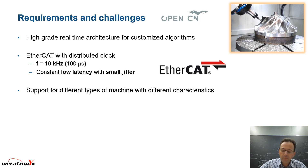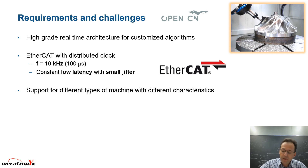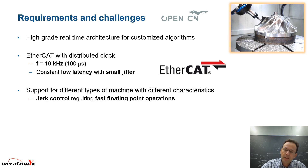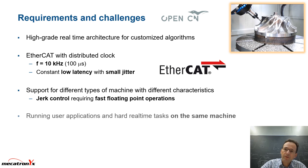We also want to support different types of machines with their own characteristics — for example, the number of axes, type of kinematics, and applications for subtractive and additive machining. Specific manufacturing and optimization algorithms use jerk control, and jerk control requires fast floating-point operations as well.